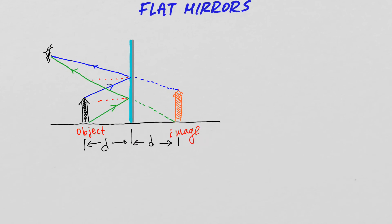So it's the same distance as the distance from the object to the mirror. And one more thing is also true, and that is that the size of the object is equal to the size of the image. So the image produced by a flat mirror is not magnified in any way.